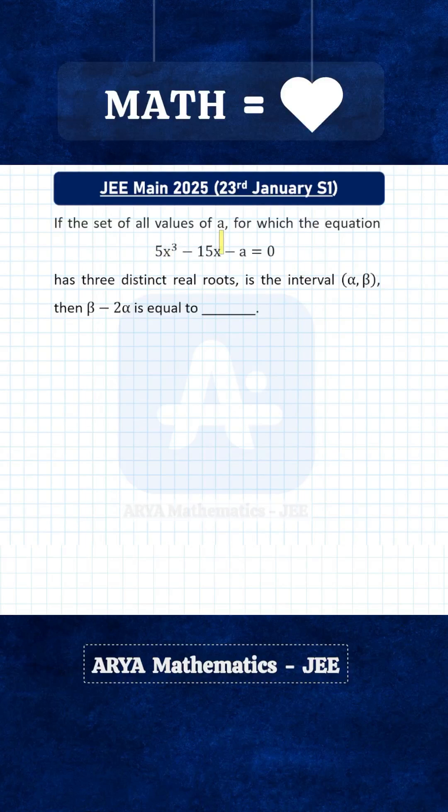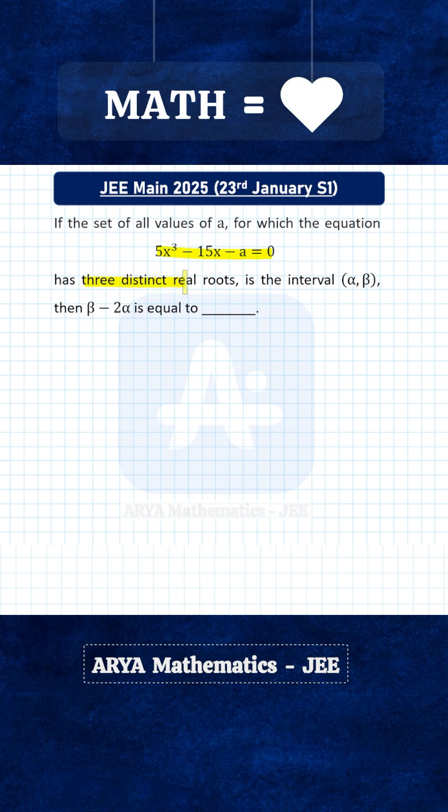If the set of values of A for which this equation has three distinct real roots is the interval alpha to beta, then we have to find the value of beta minus 2 alpha.